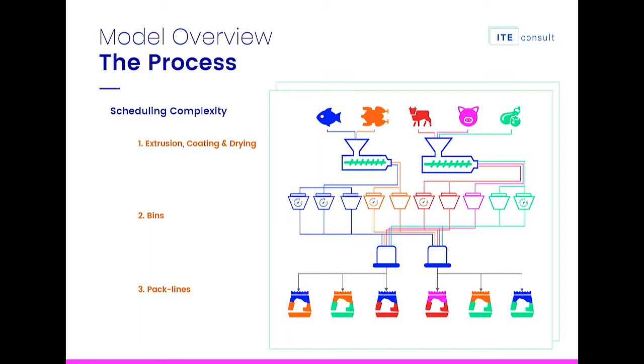We are scheduling the complexity. We have switched from monocomponent production — where you just extrude the formula, it goes to a bin, then to the pack lines, and you produce different bag sizes — to multi-component formulas. Now you have to combine different formulas that must be available at the same time when you need to pack them. If you extrude just a small amount of what you need, you have a lot of changeover times and have to clean the extruders. So that adds another layer of complexity.